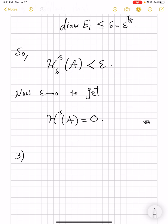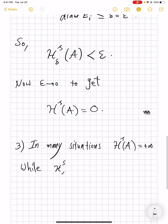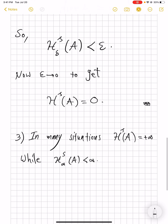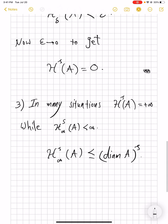So, the last but not least is the fact that in many situations, H^s of a set is infinity, while H^s_∞ of A is finite. This is usually due to the fact that H^s_∞ of A is less than actually diameter of A to power s. The reason being that you can take A to be a covering of itself. And it is an admissible covering because we have infinity and there is no restriction on the diameter of coverings. And therefore, this inequality holds.